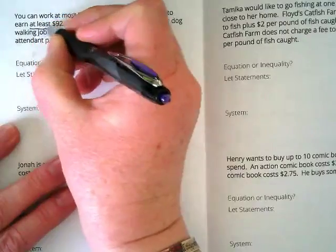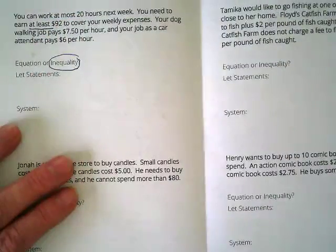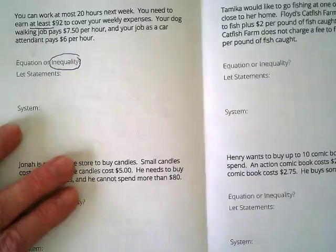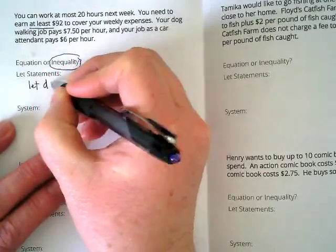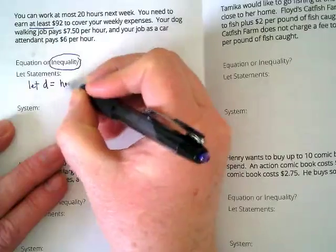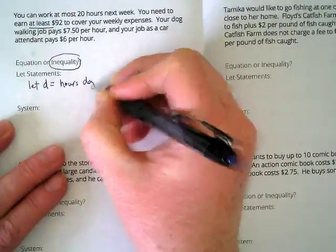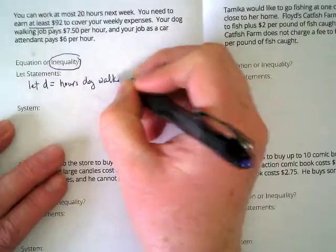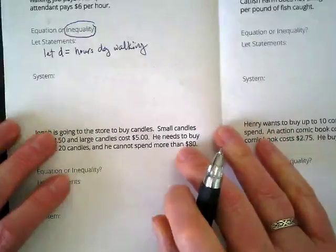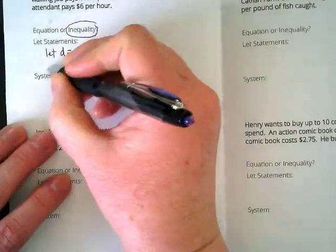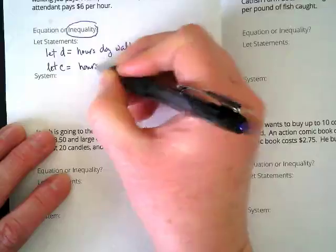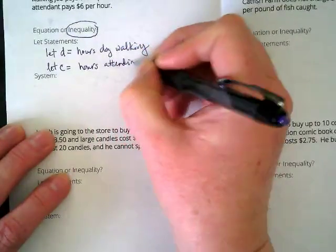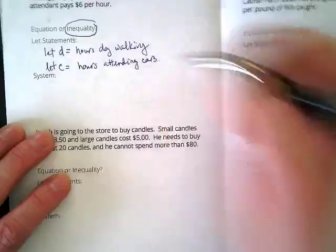There's also this at least part here that lets us know we're writing an inequality. And we're going to end up writing two because this is a system of inequalities. But let's go to our let statements first. We're going to let D equal the hours dog walking. We're going to let C equal the hours attending cars.